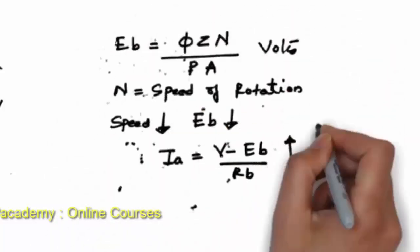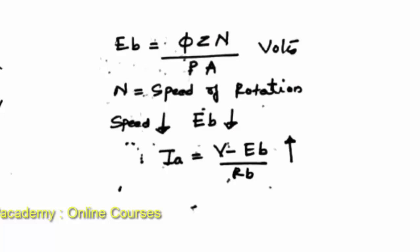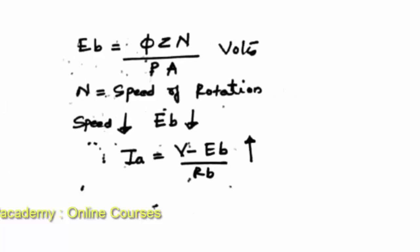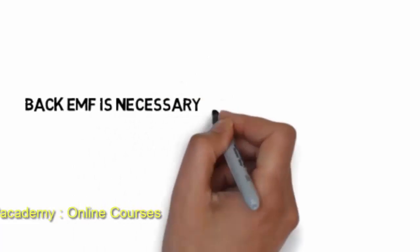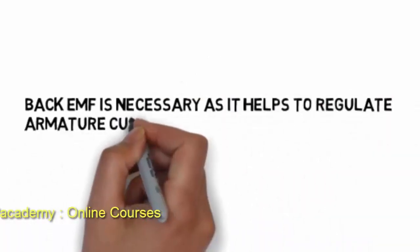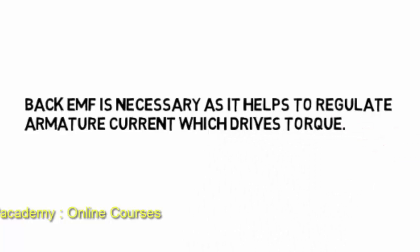The back EMF is given by the EMF equation of a generator: EB equals φZN divided by PA, where φ is the flux per pole, Z is the number of armature conductors, N is the speed of rotation of the motor, P is the number of poles, and A is the number of parallel paths. As speed decreases, back EMF decreases, causing armature current to increase, which increases torque and brings speed back up. In this way, back EMF governs the torque and regulates the speed of the motor.